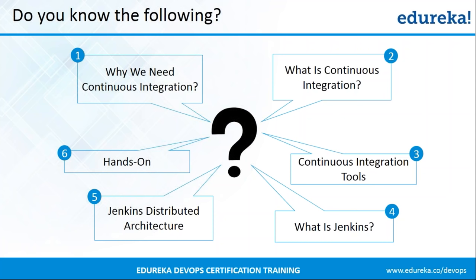First we'll see why we need continuous integration and what are the problems that industries were facing before continuous integration was introduced. After that we'll understand what exactly is continuous integration and we'll see various types of continuous integration tools. Among those tools we'll focus on Jenkins and also look at Jenkins distributed architecture. Finally, in our hands-on part we'll prepare a build pipeline using Jenkins and I'll also tell you how to add Jenkins slaves.